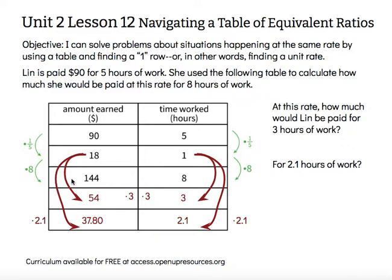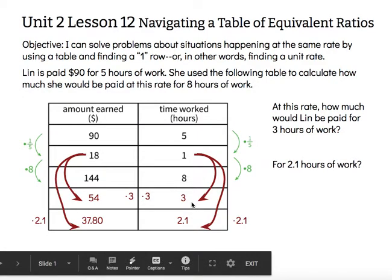The objective says: I can solve problems about situations happening at the same rate by using a table and finding a one-row. When we find a one-row — whether that's the amount she earns in one hour or how long it takes her to earn one dollar — we can take that one and multiply it by any other value, making our table of equivalent ratios even easier to grow. One times any number is easy to calculate, so a lot of the work is already done and we just work with the opposite column. Thanks for watching!